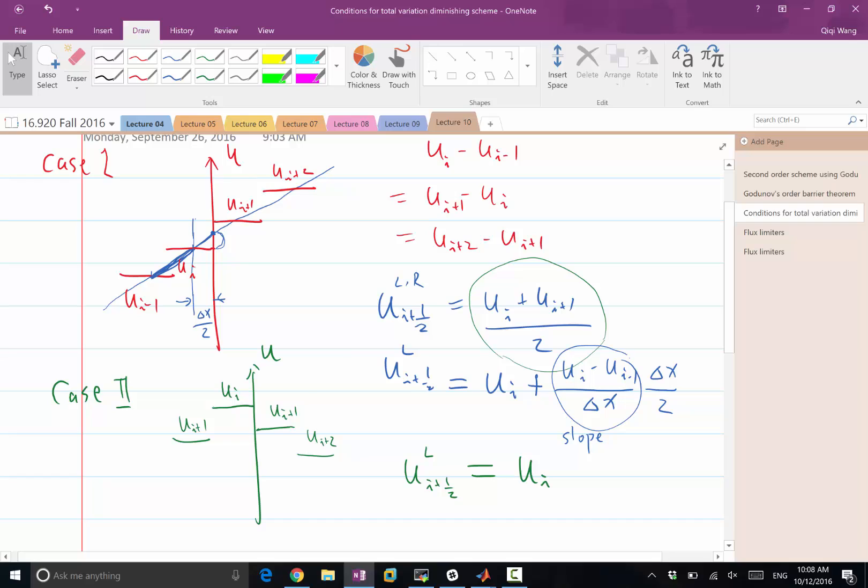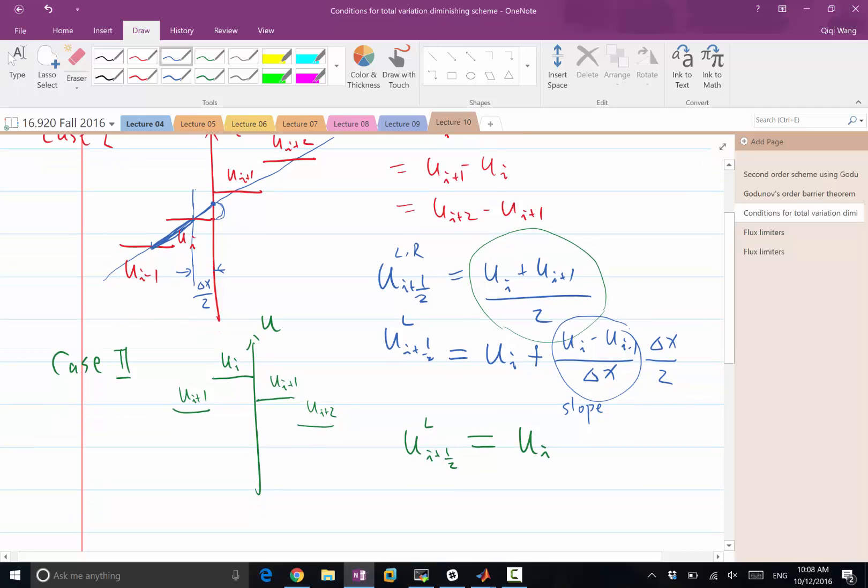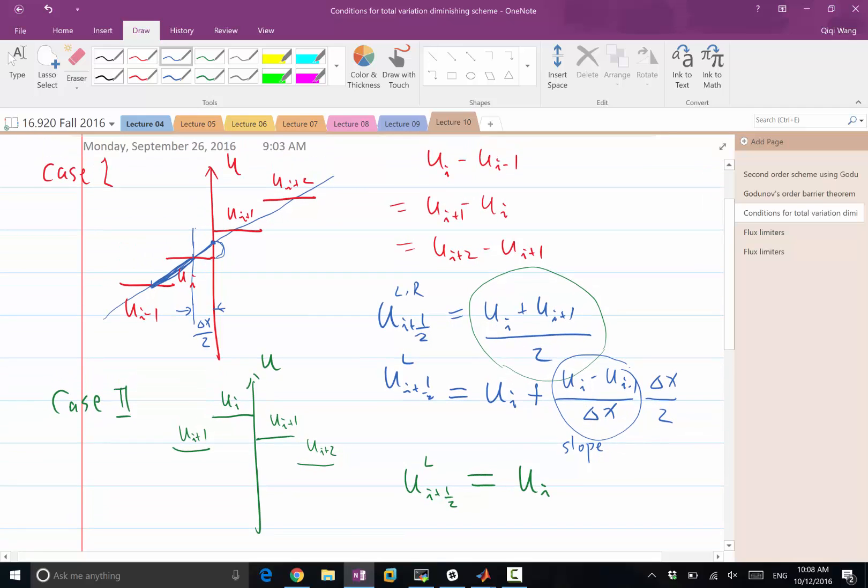So here, we are constructing, reconstructing a solution using ui minus 1. If ui minus 1 increases or decreases, the value here is going to change. While in the other case, when the function is non-smooth, when the function achieves a local extrema, the reconstructed value should not depend on ui plus 1.